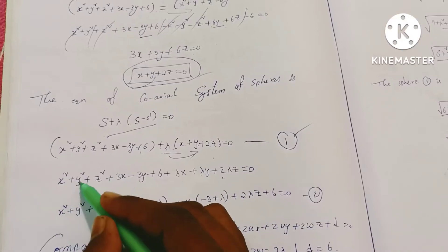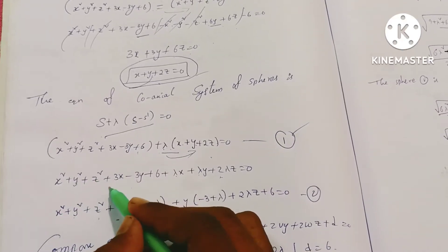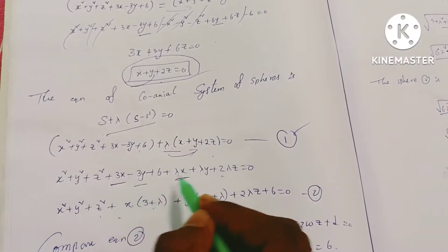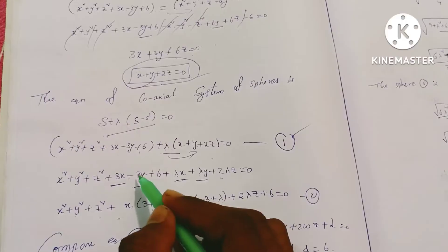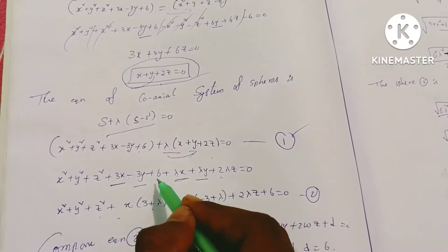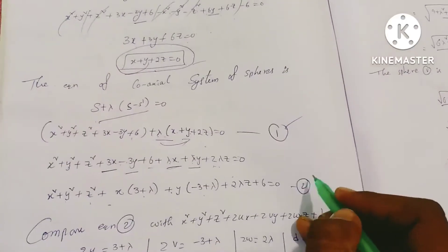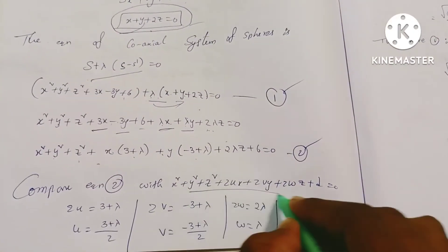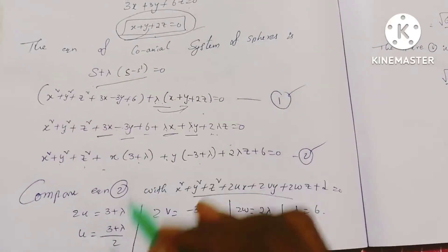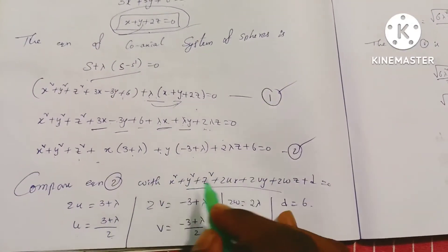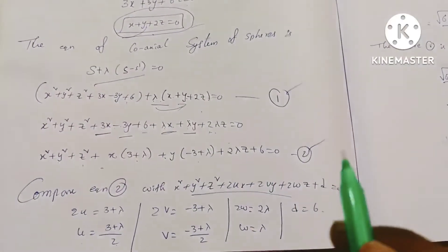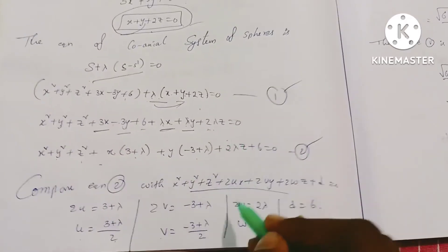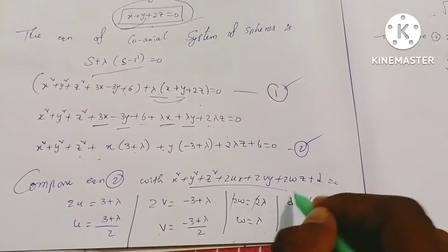Therefore, x squared plus y squared plus z squared. Collecting the x terms: 3 plus lambda. The y terms give: minus 3 plus lambda. So we have 2 lambda z plus 6 equals zero. This is equation 2. We will compare equation 2 to the general equation of the sphere. So 2u equals 3 plus lambda, giving u equals (3 plus lambda) by 2. And 2v equals minus 3 plus lambda, giving v equals (minus 3 plus lambda) by 2. Then 2w equals 2 lambda, so w equals lambda. And d equals 6.